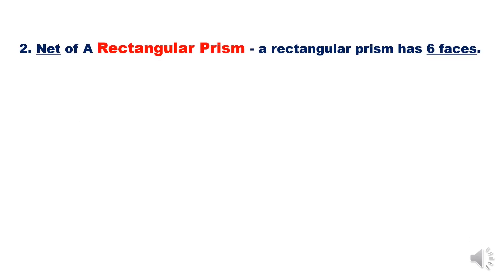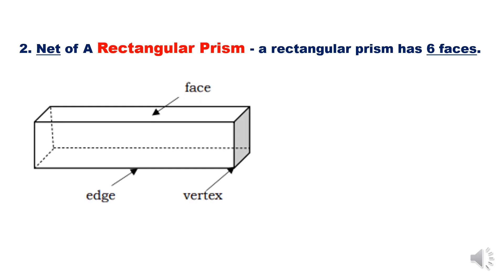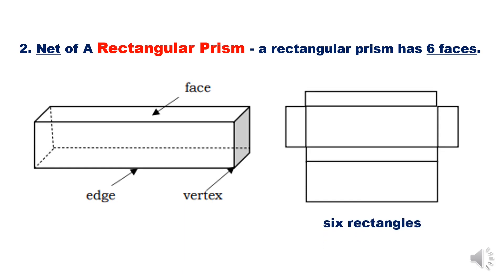Net of a rectangular prism: a rectangular prism has six faces. That is the net of a rectangular prism with six rectangles. Net of a triangular prism: a triangular prism has five faces. Three rectangles and two triangles.